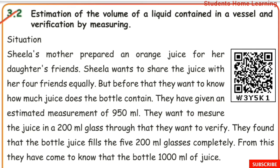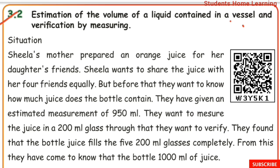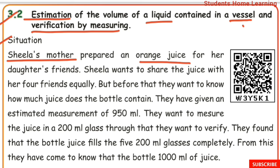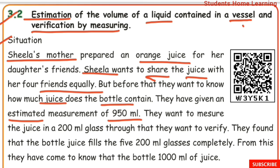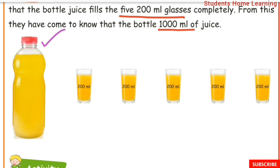Estimation of the volume of liquid contained in a vessel and verification by measuring. Sheila's mother prepared orange juice for Sheila's friends and wanted to share it equally. First they estimated the juice in the bottle — estimated about 950 ml. Then they measured by pouring into 200 ml glasses and got 5 glasses, so 5 times 200 equals 1000 ml. The bottle contained 1000 ml, which is 1 liter. The 1 liter juice bottle can fill 5 glasses of 200 ml each.